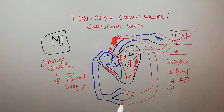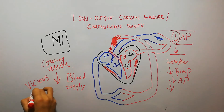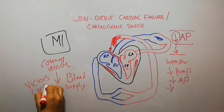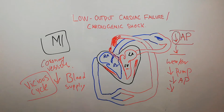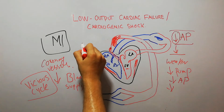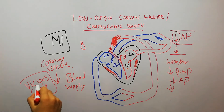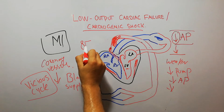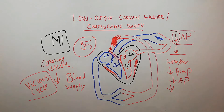This condition is known as a vicious cycle. When this vicious cycle occurs, it leads to death. The cardiogenic shock, with this vicious cycle occurring, leads to death in around 85% of people.